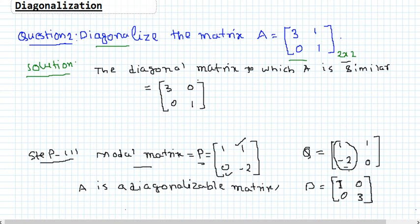So D = [[1, 0], [0, 3]] is our diagonal matrix, to which the given matrix A is similar. I think you understand the whole process of diagonalizing a matrix A.